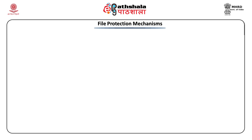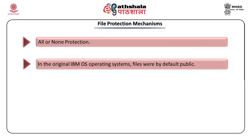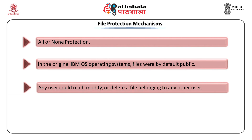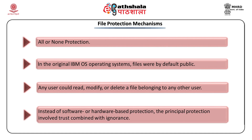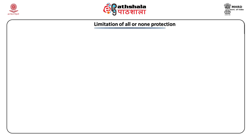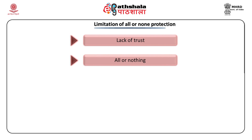File protection mechanism: all-or-none protection. In IBM OS, originally files were by default public — any user could read, modify, or delete files belonging to any user. What are the limitations of this all-or-none protection? First, lack of trust: the assumption of trustworthy users is not necessarily justified. In large systems, not every user knows the other users. Second, all-or-nothing: even if a user identifies trustworthy users, there is no convenient way to allow access only to them. Third, the rise of time-sharing: on time-sharing systems, users interact with other users and are more likely to arrange computing tasks.